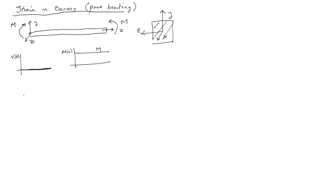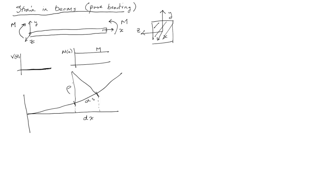If you had a beam that deflected under pure bending, we know it's going to be a circular arc. We have some arc length ds, and the associated beam length dx that deflected into ds. We can look at what's called the radius of curvature and the angle dθ, which is the rotation of the beam. Curvature kappa is defined as one over the radius of curvature ρ. If you're looking at a flat surface, the curvature is zero and the radius of curvature is infinite.